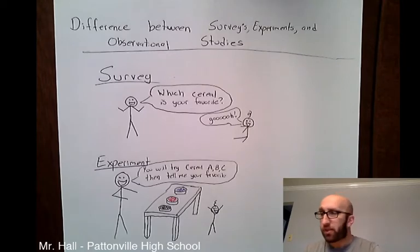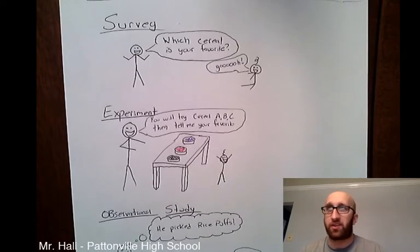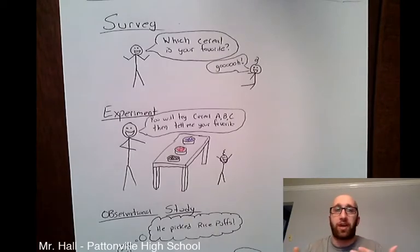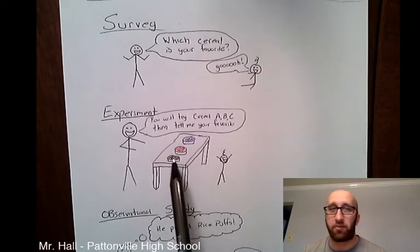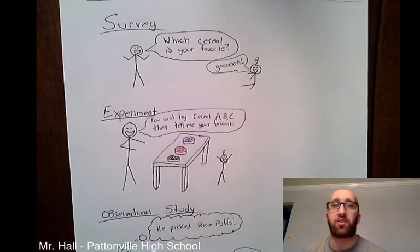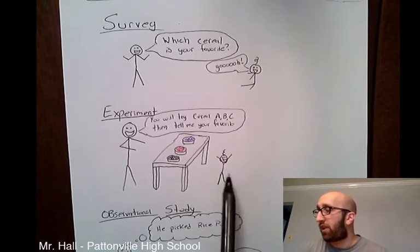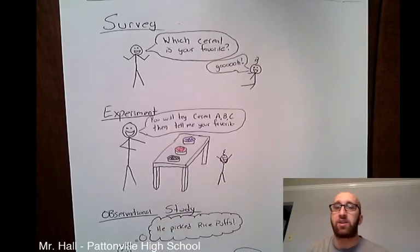When you switch to an experiment, that means you're actually going to try and control something. I'm going to set things up and maybe force the people involved to do something, and then we look at results. In my drawing, I have three different cereals — a black cereal, a red cereal, and a blue cereal — and I'm going to have my son try all three. I'm making him do something. We call those treatments, and then he determines which one is his favorite cereal.